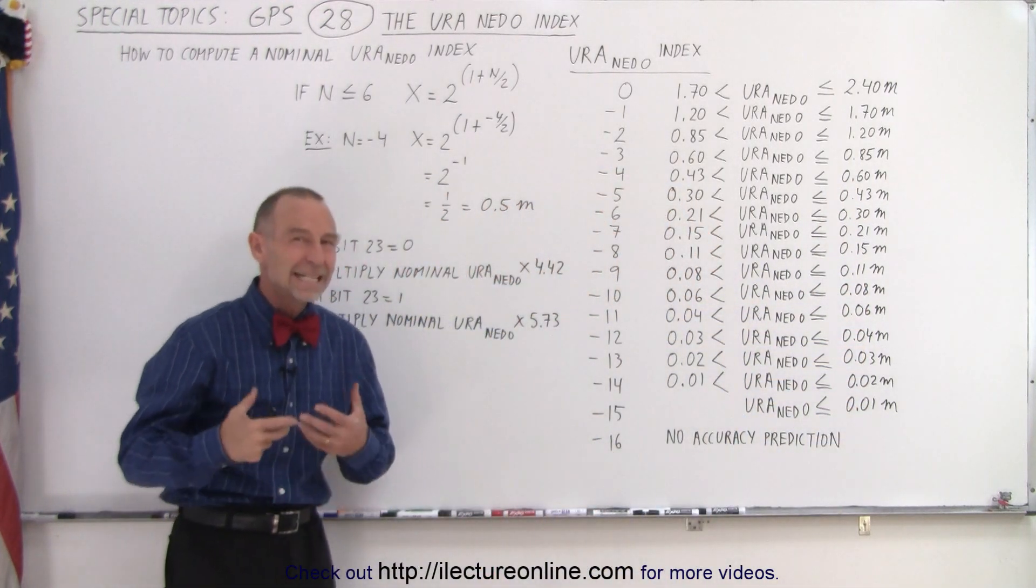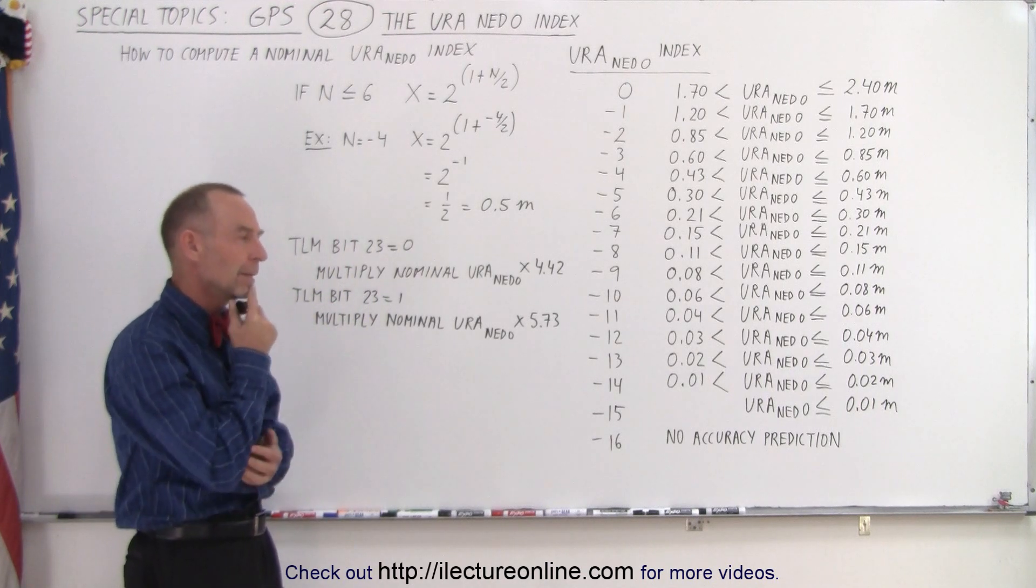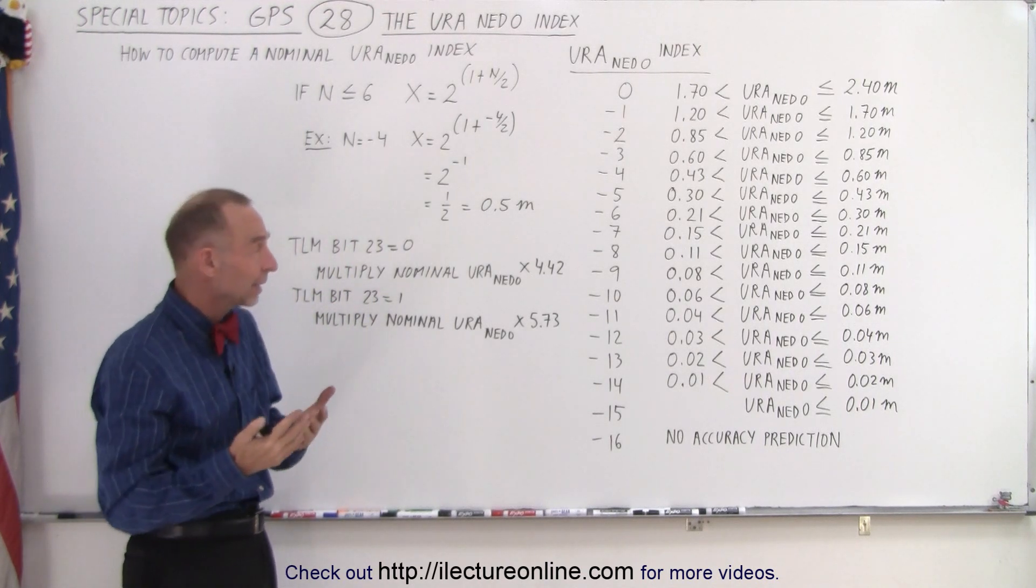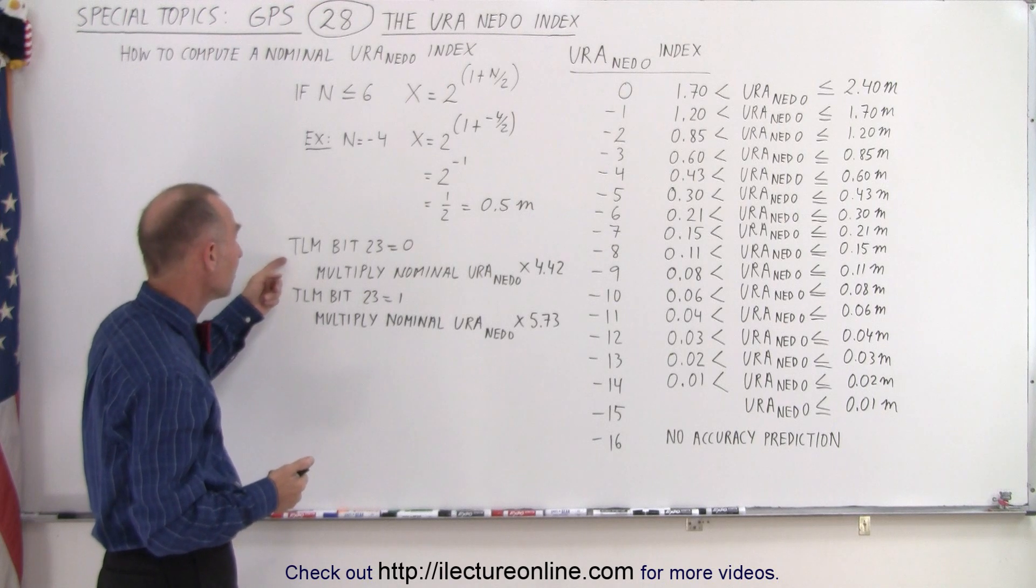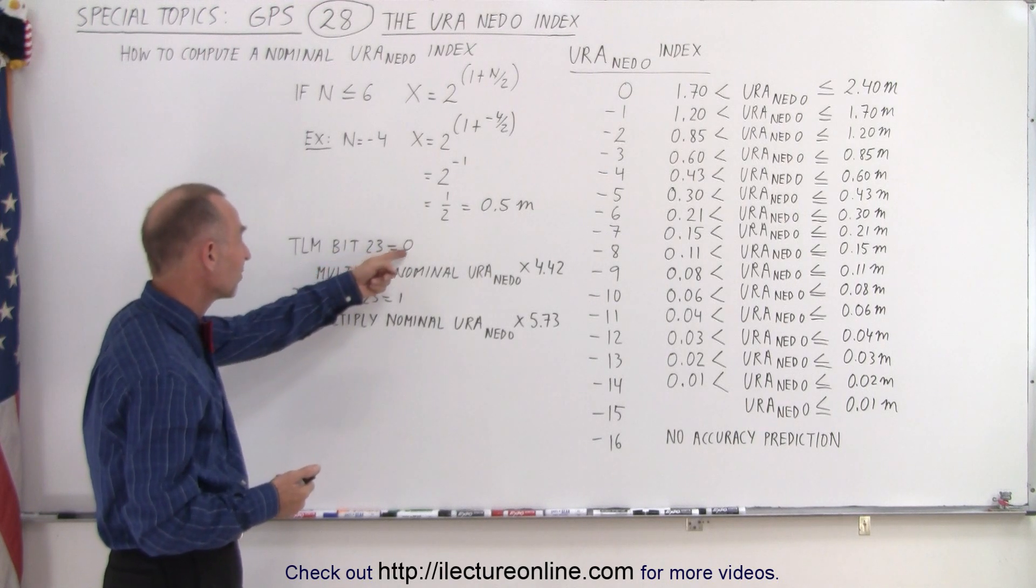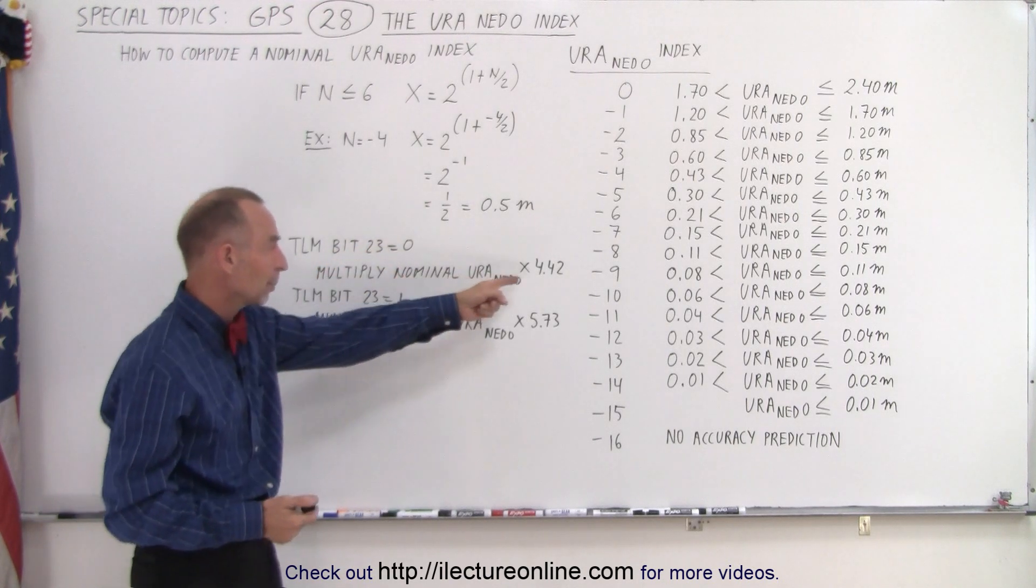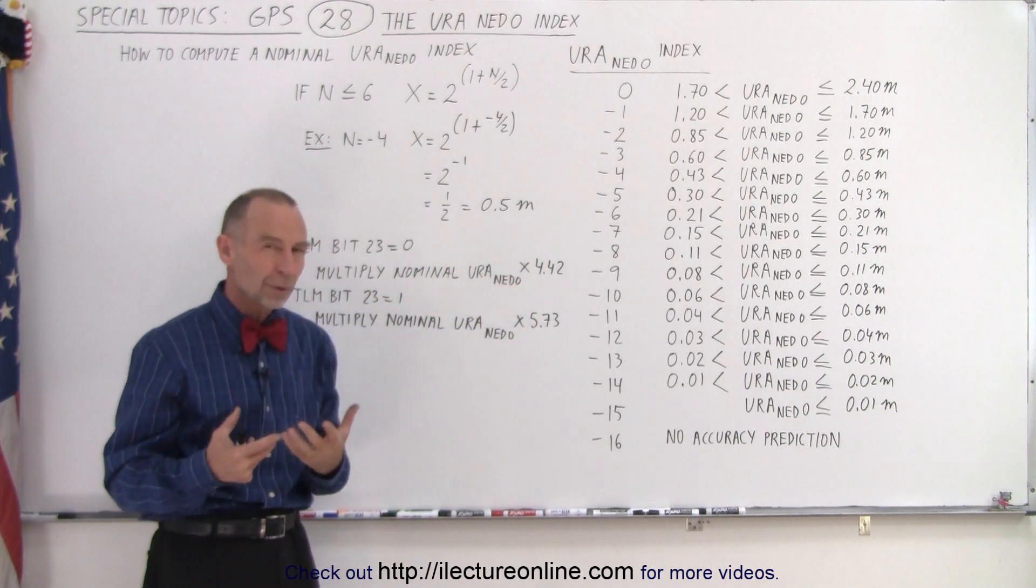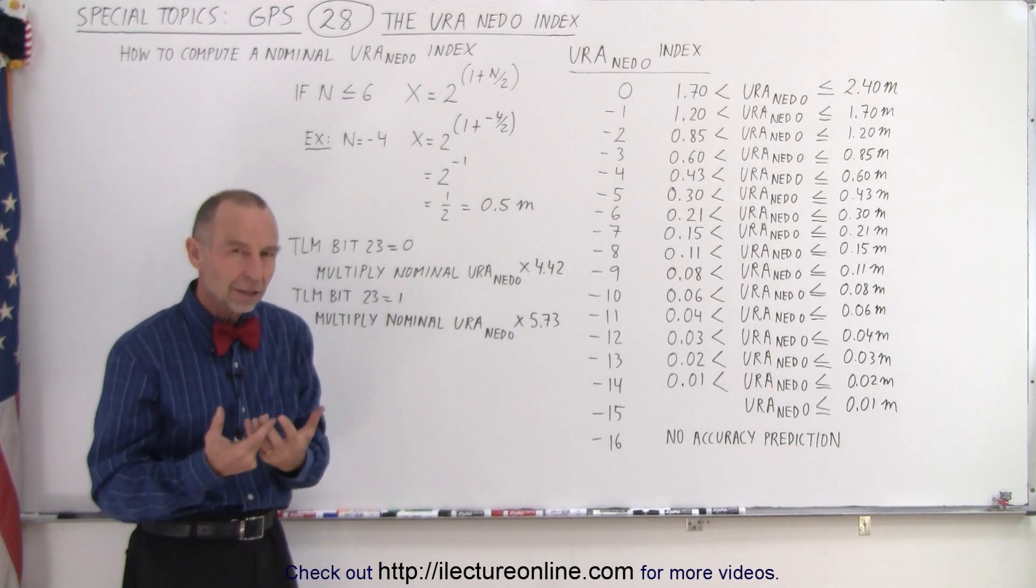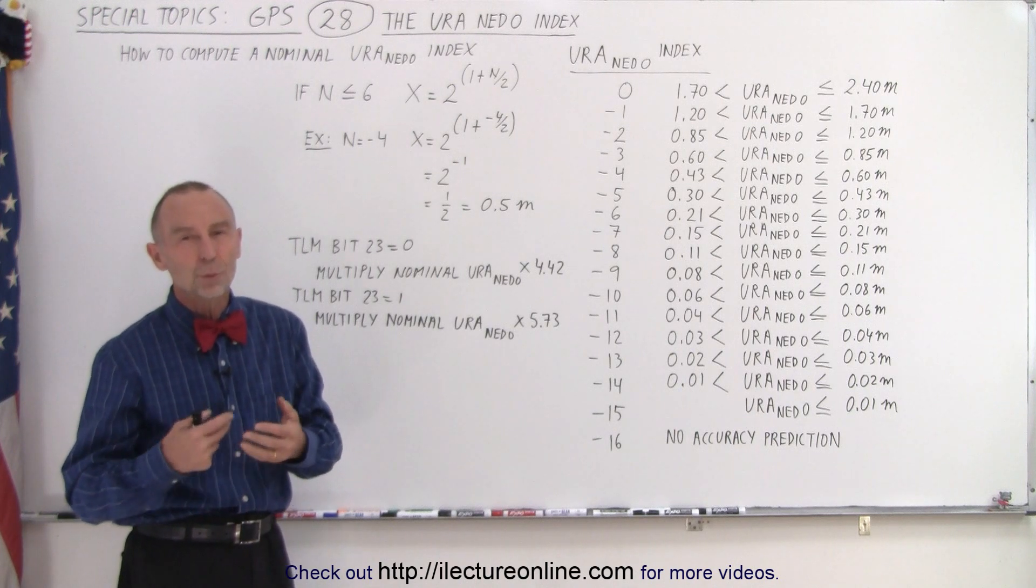So that's a URA that then gets multiplied depending upon the value of the TLM bit 23 being set to zero or one. That number then gets multiplied times 4.42 or 5.73 to get a first cut at a nominal error in the range.